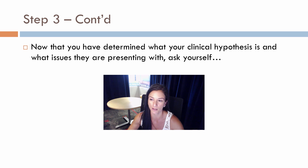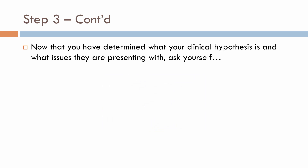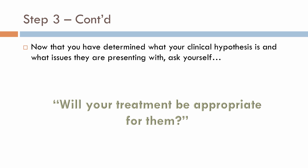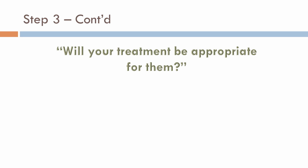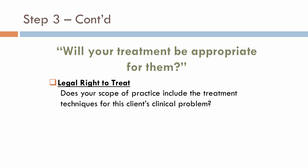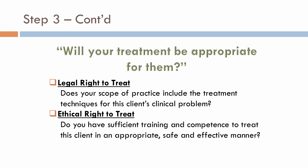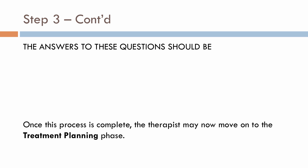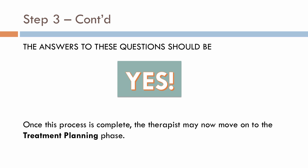Now that you've determined your clinical hypothesis and the issues the client is presenting with, ask yourself: will your treatment be appropriate for them? Consider two factors. First, your legal right to treat — does your scope of practice include the treatment techniques for this client's clinical problem? Second, your ethical right to treat — do you have sufficient training and competence to treat this client in an appropriate, safe, and effective manner? The answers to these questions should be yes. Once this process is complete, the therapist may move on to the treatment planning phase.